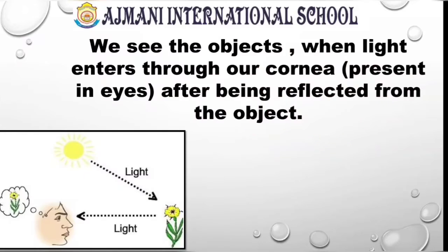How does it happen? We always see objects when the light enters through our cornea, which is present inside our eyes, after being reflected from the object. Look at the image on your screen. The sun is the source of light, allowing its light to go in the form of rays and fall on the flower. After falling on the flower, these rays are being reflected and the projection of the flower is presented in our eyes — and this way we see the object.